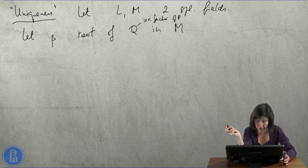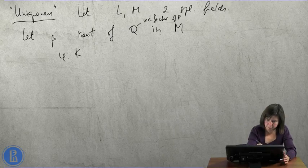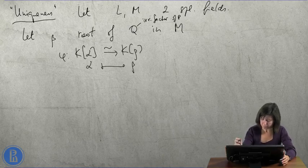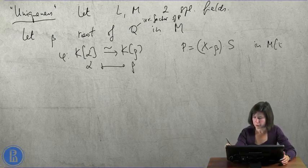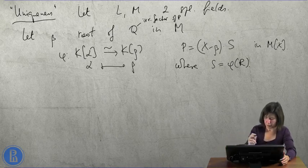Then, k of alpha, which is L1, and k of beta are both stem fields for q. So, we have an isomorphism phi from k of alpha to k of beta which sends alpha to beta. Now, p is x minus beta times s in M of x.